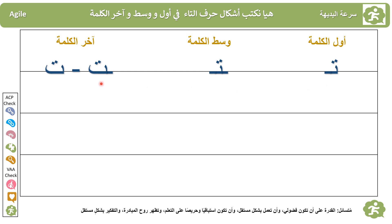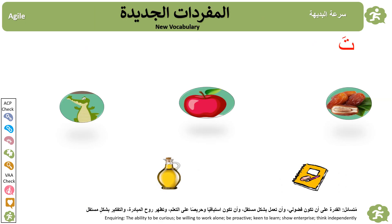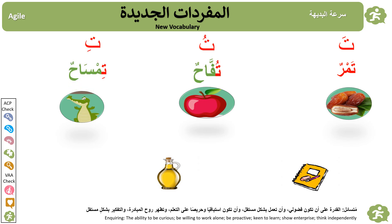At the end, little Taa has only one hand. We also learned little Taa with short vowels: Taa with fatha — تَ (Ta), with damma — تُ (Tu), and with kasra — تِ (Ti).